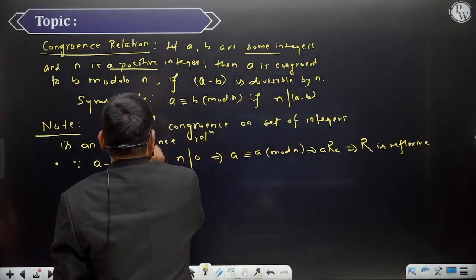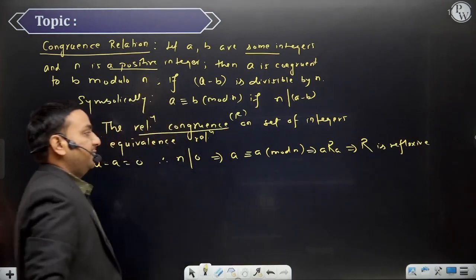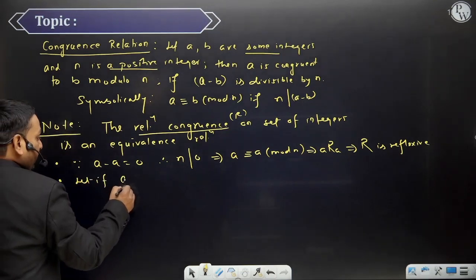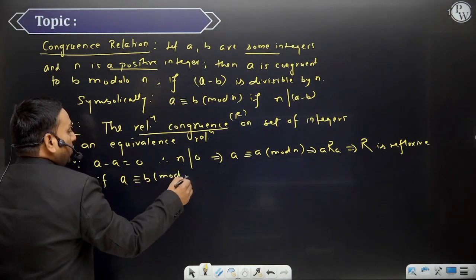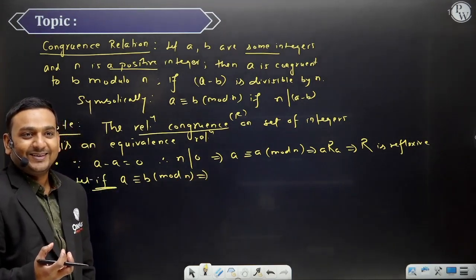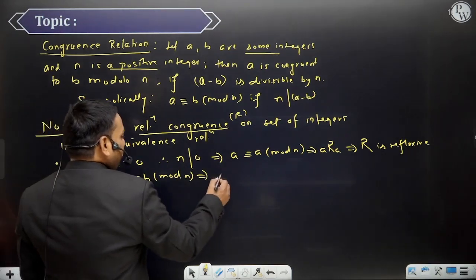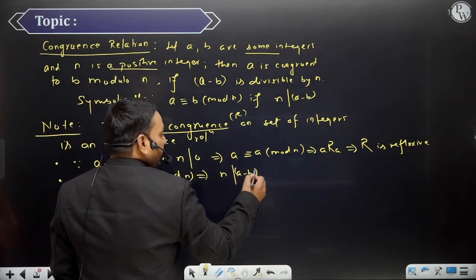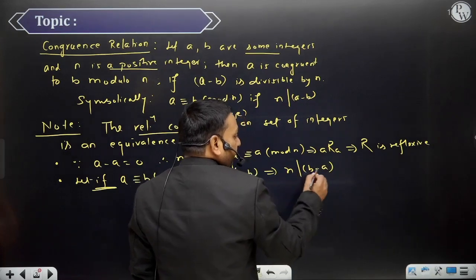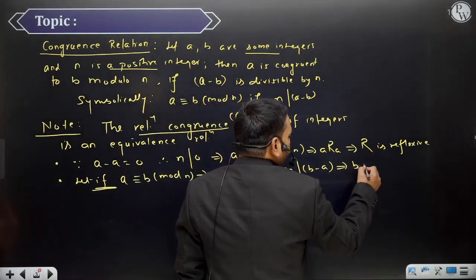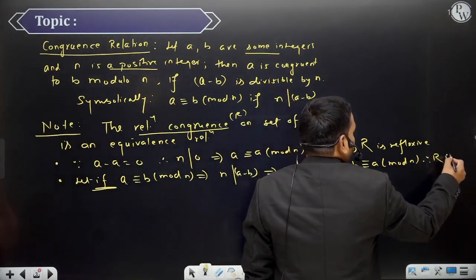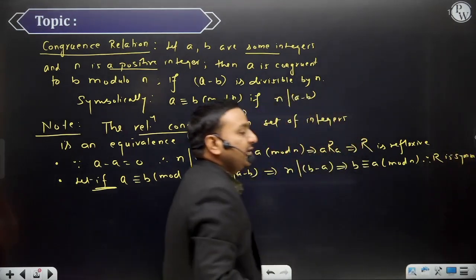The congruence relation. Let if A is congruent to B modulo N, this implies N divides A minus B. This will imply N divides B minus A as well. If this is happening, then we can say B is congruent to A modulo N. So R is symmetric as well.